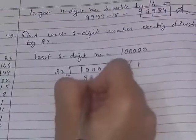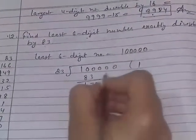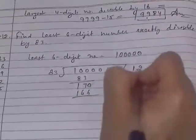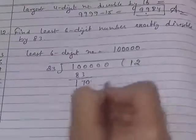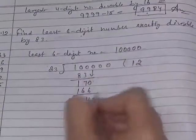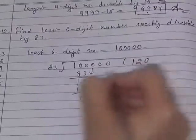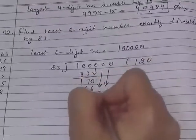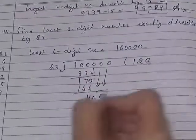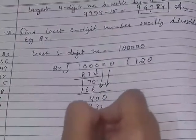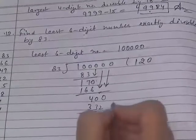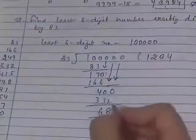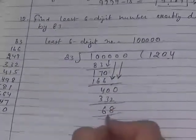Write down the table of 83. 83 ones are 83, carry 0. Then 170 is 166, 2 times, carry 0. 40 will not divide, then we carry 1 more 0 and put a 0 here. Then 332. Subtract it. 332 at 4th place. Then remainder is 68.